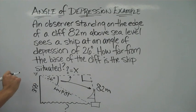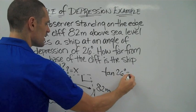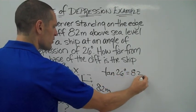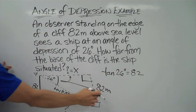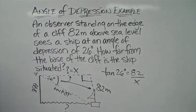Well, opposite over adjacent should speak tangent to you. So tangent of 26 degrees is equal to 82, which is in front or opposite, divided by x. And it becomes a very simple problem there.